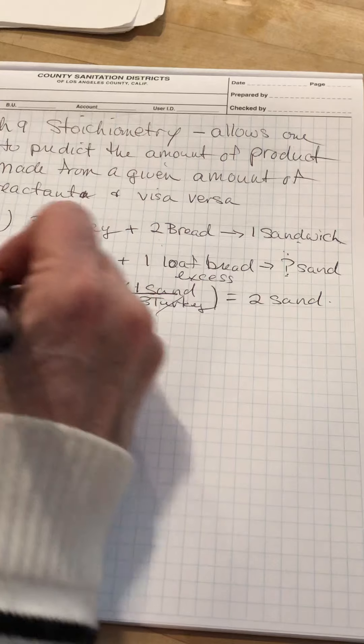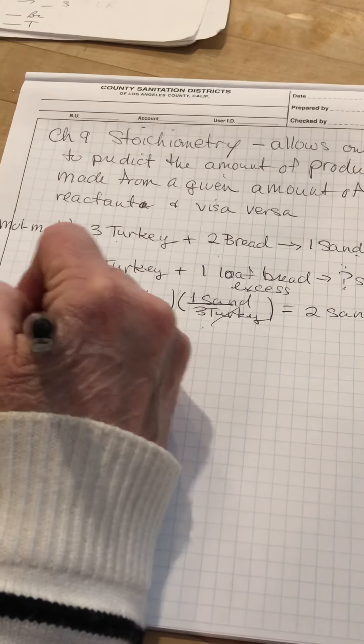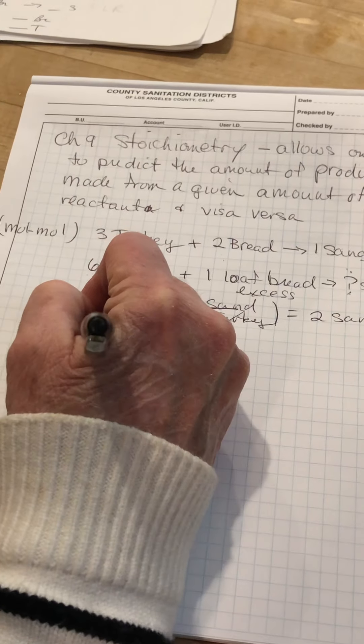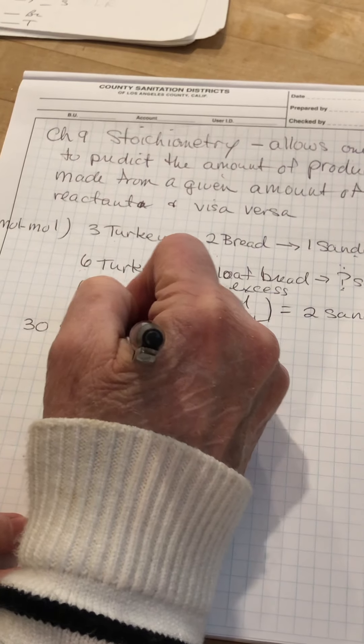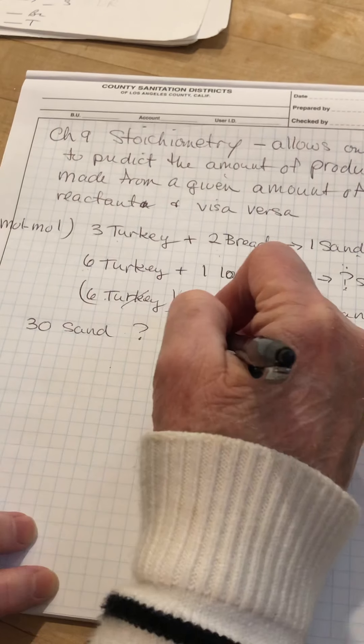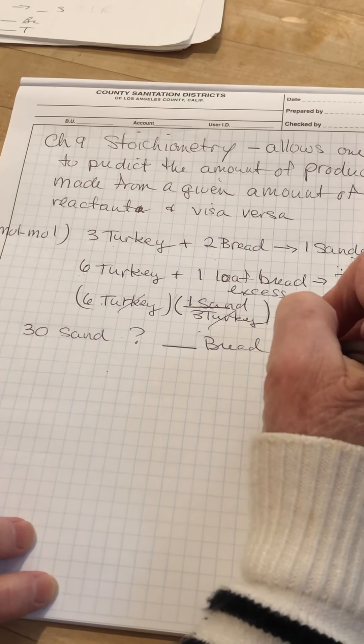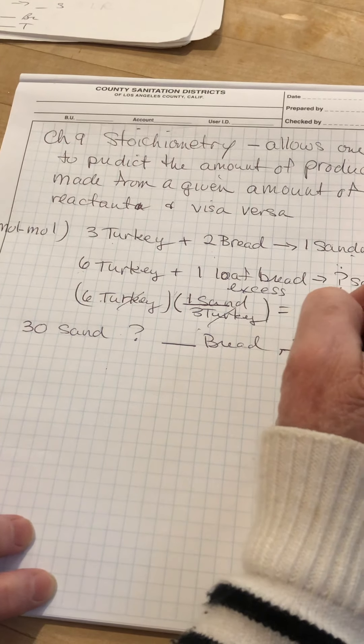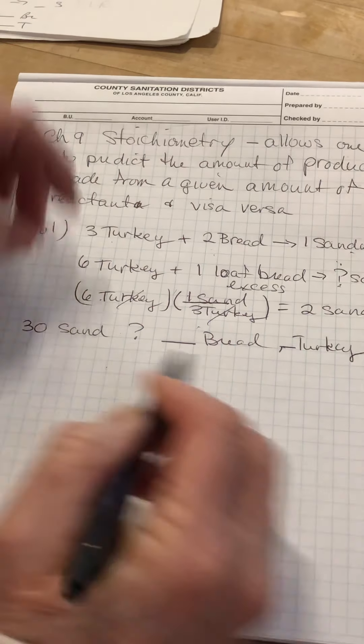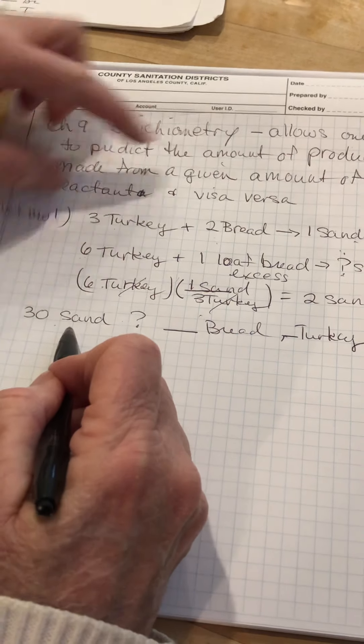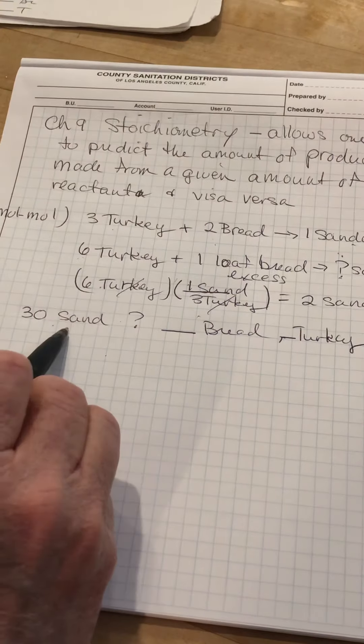Suppose I needed to make 30 of these really nasty turkey sandwiches. I need 30 sandwiches. And my question is, how much bread do I need? And how much turkey do I need? Here, we're going from the product, the sandwich, to the reactant.